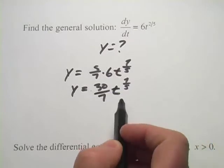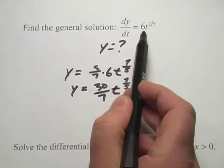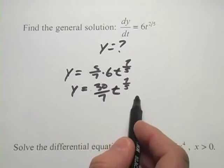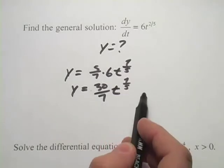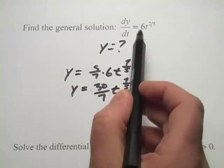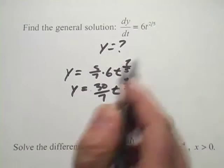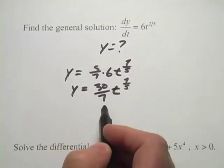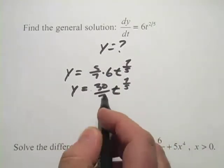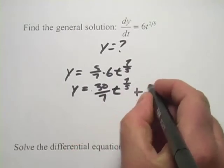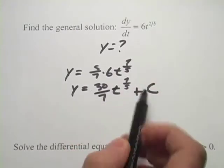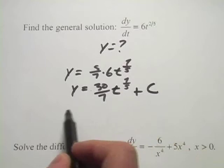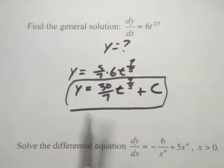What if we had 30-sevenths t to the seven-fifths plus one? Well, when you take the derivative, the one would just disappear, and you'd end up with this, or plus two, or plus a million. Any constant out here would give you the same derivative here. So when we take an antiderivative, or it's also called an integral, when we do that, we add on a big C to denote that this could be any constant there. And that would be the answer.